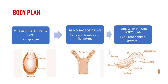Next we discuss body plan. There are three types: cell aggregate body plan, blind sac body plan, and tube within tube body plan. In cell aggregate body plan, found in sponges, there is aggregation of cells with no tissue or organ system. There is only one cavity present.